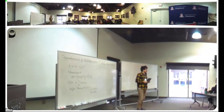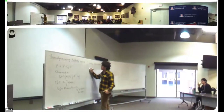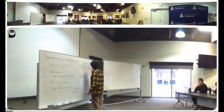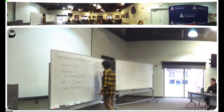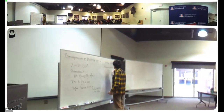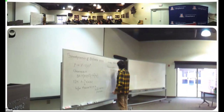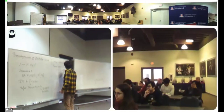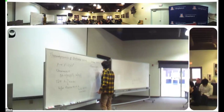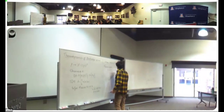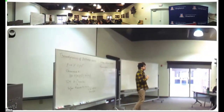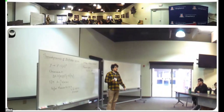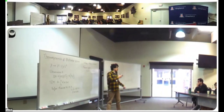Then we measure again — in the same basis A. We obtain the conditional probability of finding outcome a′ given a, which is |⟨a′|U|a⟩|². This is the probability that the system transitions from a to a′. The full joint probability of the two outcomes is P(a, a′) = P(a′|a) · P(a).